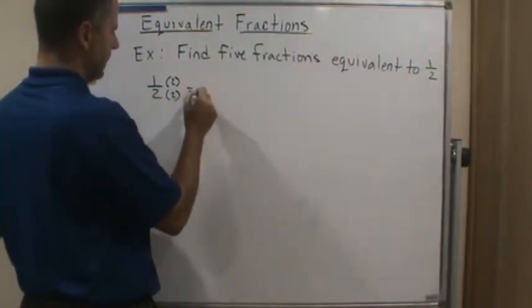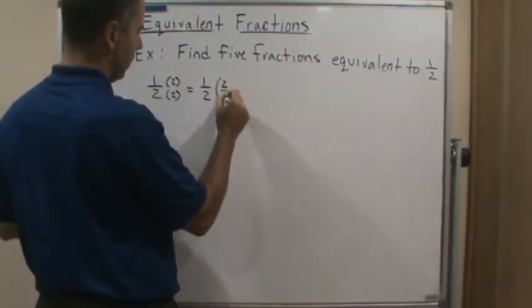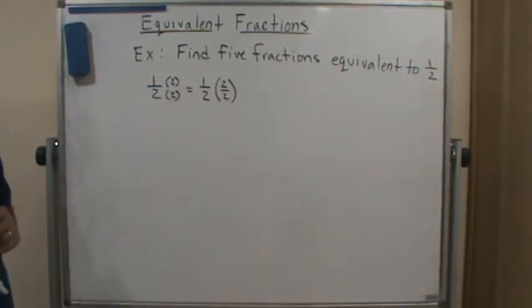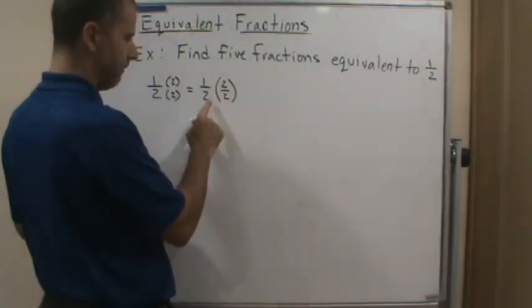But isn't that the same as taking one half and dividing by 2 divided by 2? Think about that. So basically what I'm doing is I'm just multiplying by a form of 1.